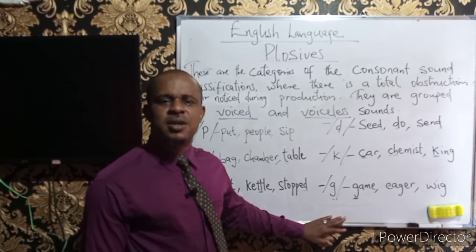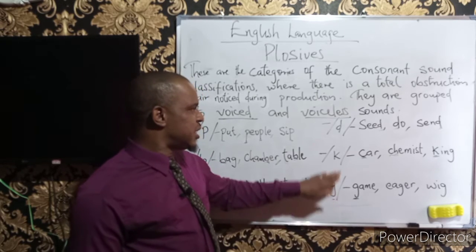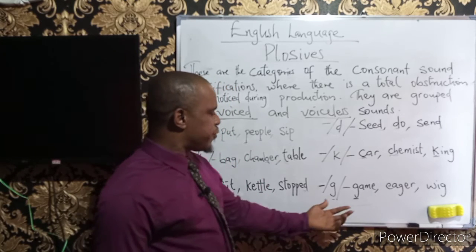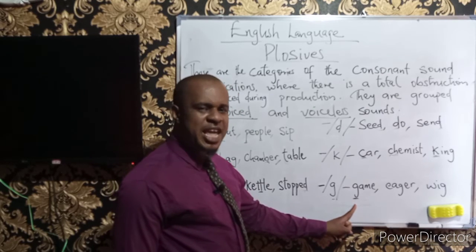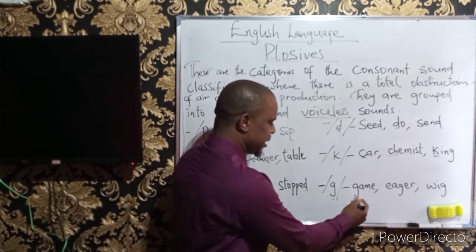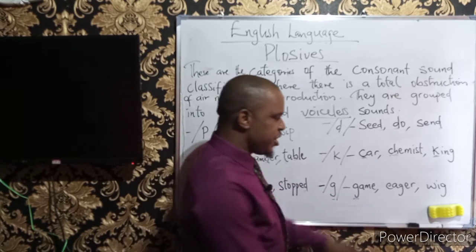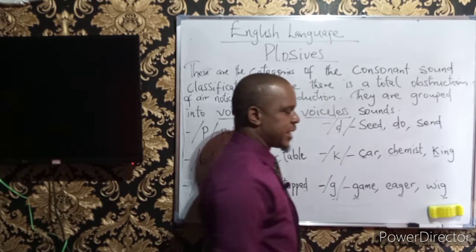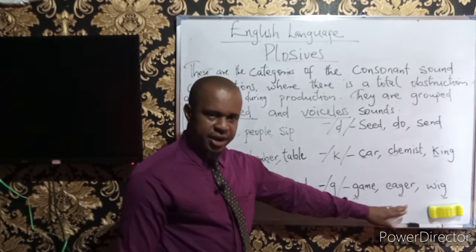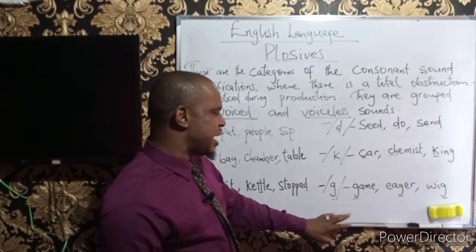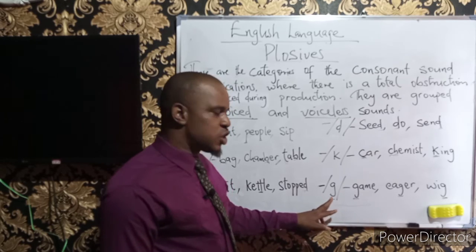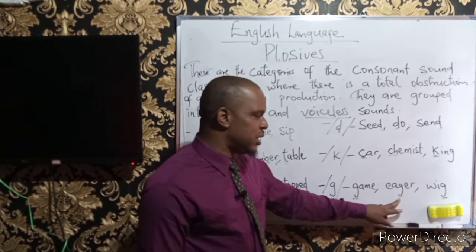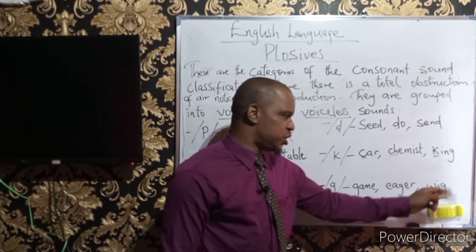The final sound is /g/. This is the voiced sound, where vibration is noticed in our vocal cord. Examples include 'game', 'eager', and 'weak'. Notice that the same sound /g/ is obtained from the first example at the initial position, the second one in the middle position, and the third one in the final position of the word.